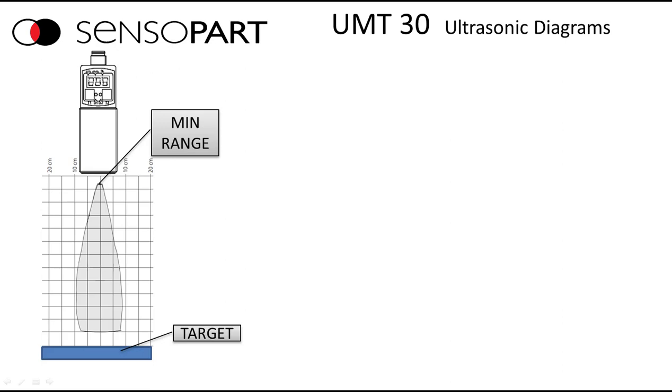This light gray diagram shows the ultrasonic pattern against a flat target. You can see the width is plus and minus about 10 centimeters. And you can see the minimum range and the maximum range to the target.